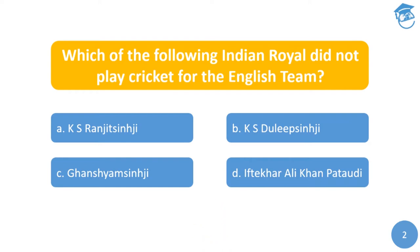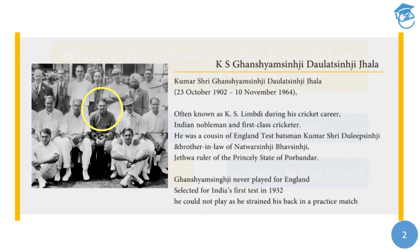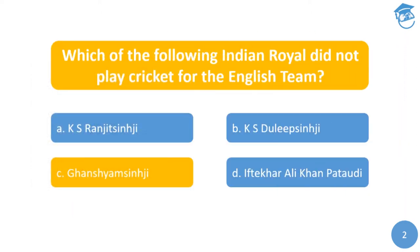The answer is Gansham Sinhji. All three — Ranjitsinhji, his nephew Duleep Sinhji, and Iftikhar Ali Khan Pataudi — played cricket for England, and Iftikhar Ali Khan also went on to play three test matches for India. Gansham Sinhji, the Prince of Limdi, could not play for either India or England. Although selected for the first test match in 1932 for the Indian team, he strained his back in a practice match just before the test and could not play.